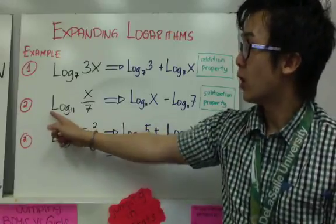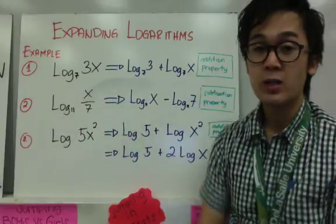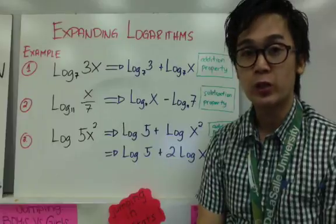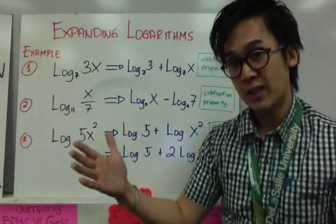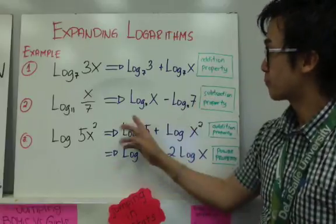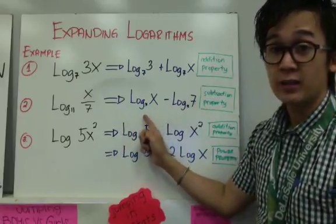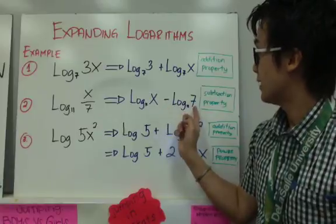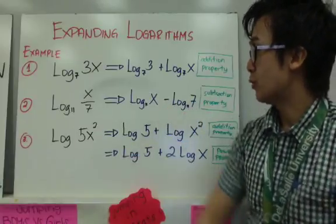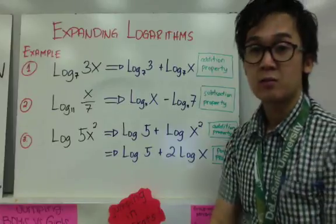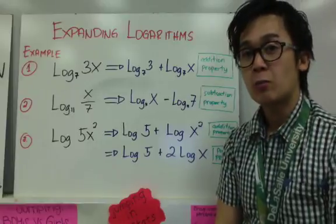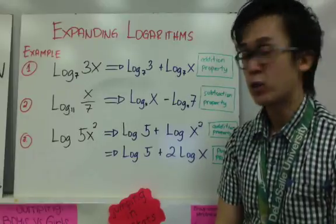For number 2, logarithm of x over 7 base 11 — check the properties and see which one you can use to expand it. Using the subtraction property, logarithm of x base 11 minus logarithm of 7 base 11. Sometimes one property is enough to expand it, but sometimes you need to use two properties to expand the logarithm.